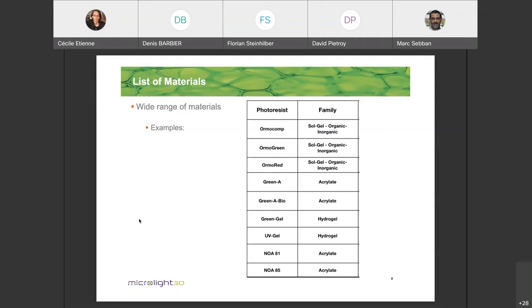We can print into epoxy, acrylic, soldier materials, hydrogel. And here some biomaterial like proteins collagen. So that gives us the possibility to use the machine for a wide range of application. And I'm going to show you some example.